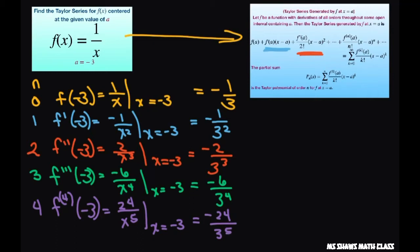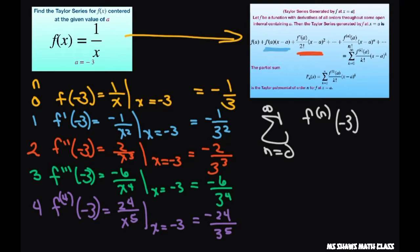So if I write this as a sum, this is going to be the sum from n equals 0 to infinity. We're taking our nth derivatives of negative 3, and then our denominator is going to be n factorial times x minus negative 3, which is x plus 3 to the power of n.